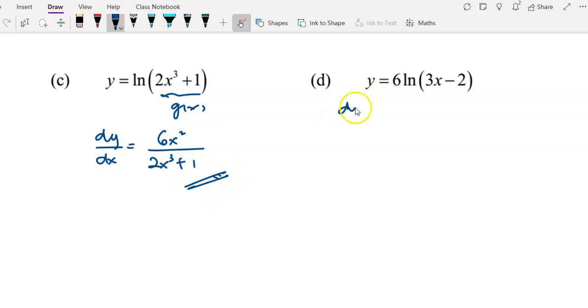And the last example, I have the coefficient 6. So copy the coefficient first, and then take this as your g(x). Differentiate the g(x), you have 3, and over the g(x), that will be 3x minus 2. And now we can simplify your answer to multiply the 6 by 3. You have this. Alright, thank you for watching.